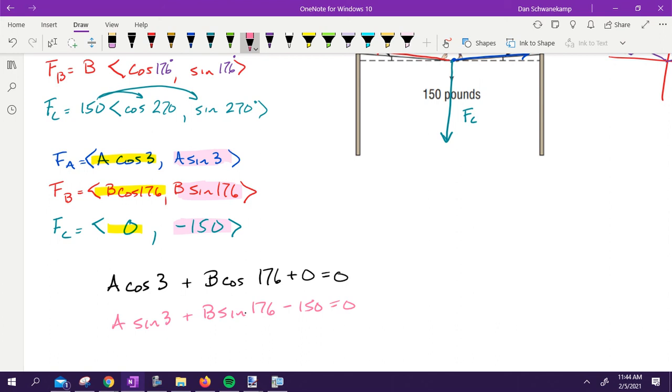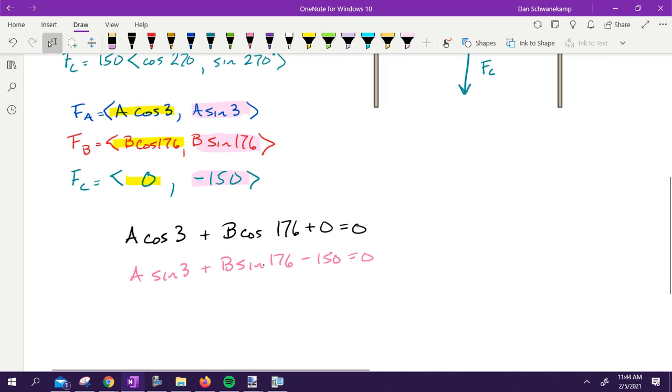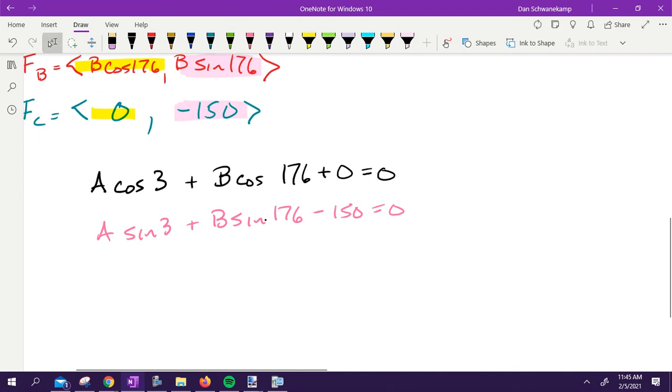Anybody with me to that point? Super. We have two equations with two variables. Two equations, two variables. Since algebra one, we solve that using substitution. That's what we're going to do. So I'm going to pick one of these equations. This one's a little bit easier. What letter would you like to get by itself? A. So if I get A by itself, I've got A cosine of three.